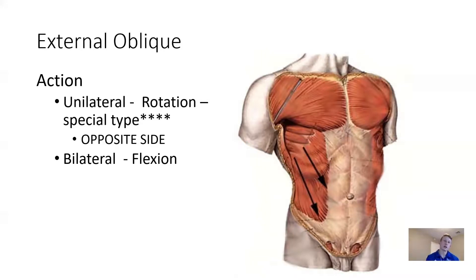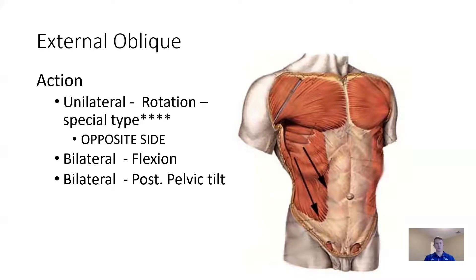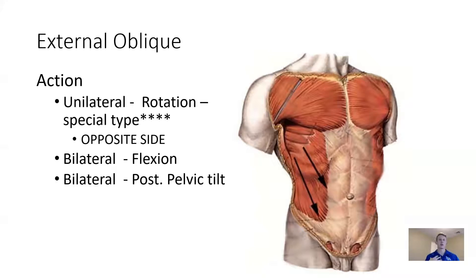When they work bilaterally — both muscles contract together — they will be synergists for rectus abdominis and create trunk flexion. They neutralize each other's rotation and allow only flexion. When they're causing flexion, lumbar flexion and posterior pelvic tilt are the same movement. If the thorax is stable, the pelvis will move; if the pelvis is stable, the thorax will move. But they will always move towards each other.